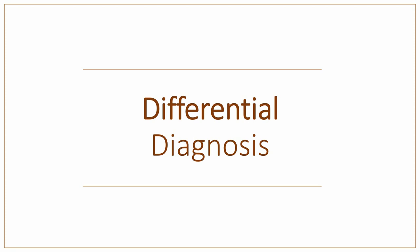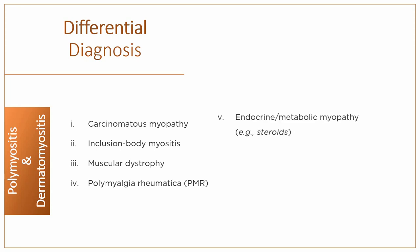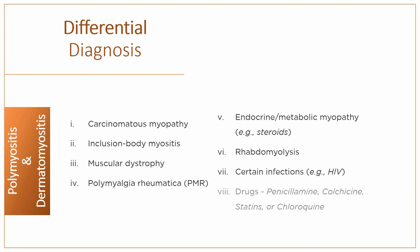Although the diagnosis may be straightforward, the differential diagnosis that needs to be considered includes carcinomatous myopathy, inclusion body myositis, muscular dystrophy, polymyalgia rheumatica, endocrine and metabolic myopathies — for example myopathy associated with steroid use, rhabdomyolysis — certain infections such as HIV, and myopathies associated with drugs like penicillamine, colchicine, statins or chloroquine.